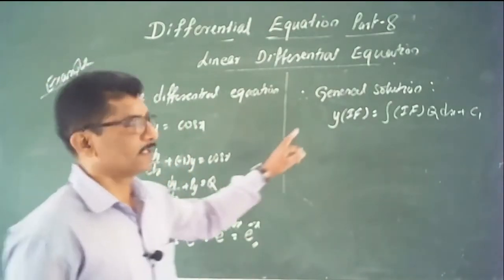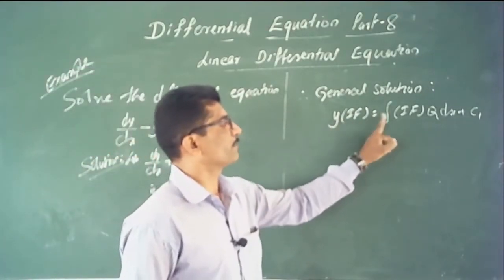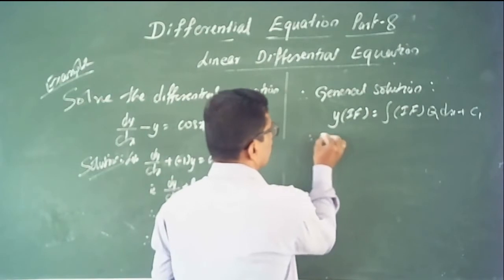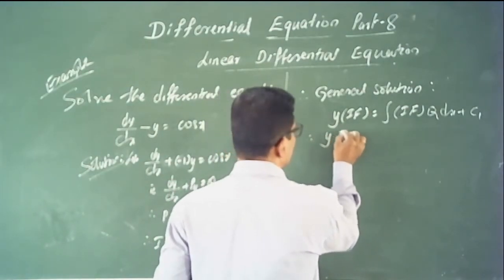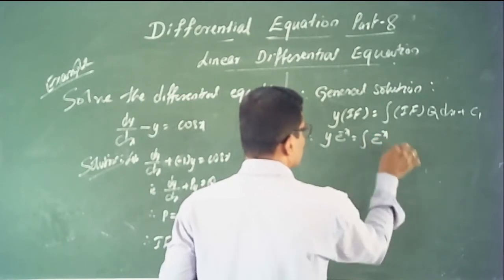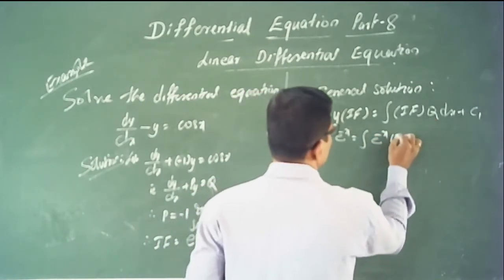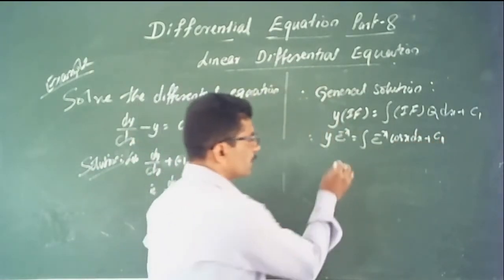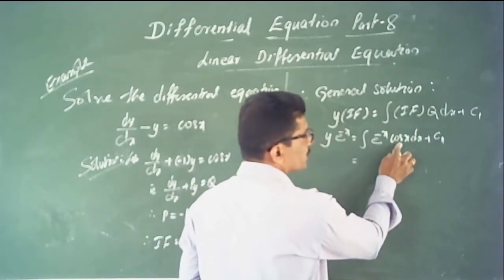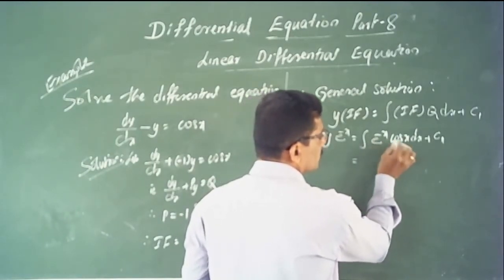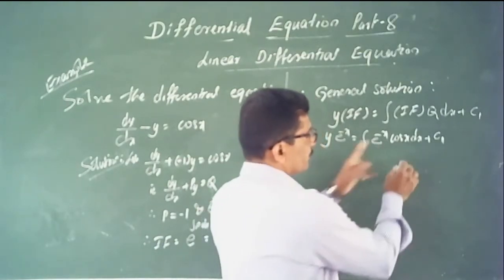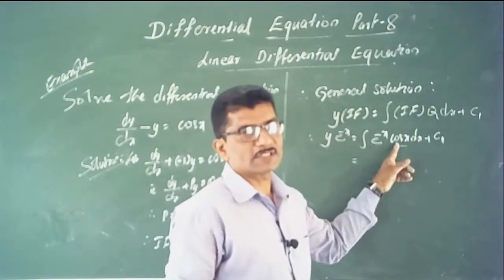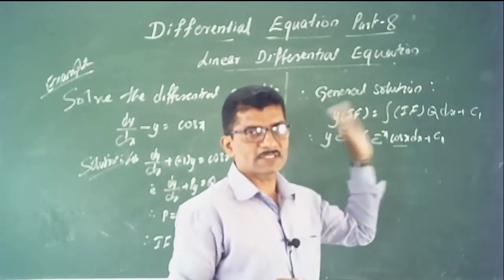The general solution of the linear differential equation is y × I.F. = ∫(I.F. × Q) dx + C. Therefore y·e^(−x) = ∫e^(−x)·cos x dx + C. The right-hand side involves a product of two functions, so we use integration by parts.